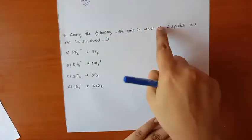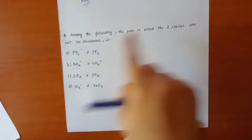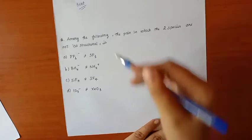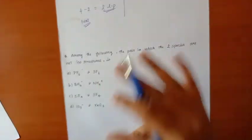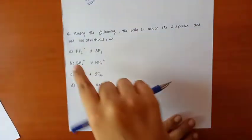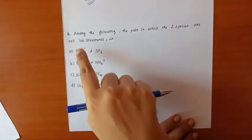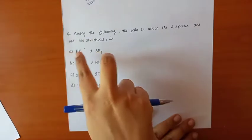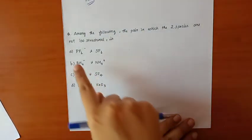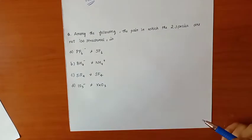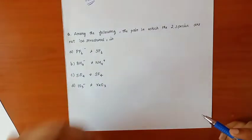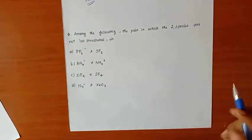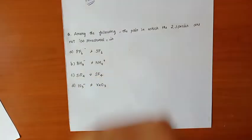Among the following, find the pair in which the two species are not isostructural. Isostructural means having the same shape. We need to find the pair whose two compounds have different shapes.